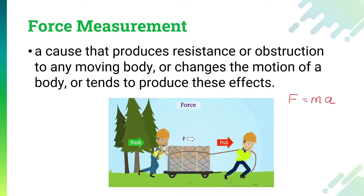So basically, force depends on mass as well as acceleration. When we talk about force, it is related to acceleration. And whenever acceleration is used as gravitational force — that means whenever we use gravitational acceleration — we are basically talking about weight. So W = M × G. When we talk about force measurement, we will also be talking about weight measurement. Now let us understand what methods are available for force measurement or weight measurement.